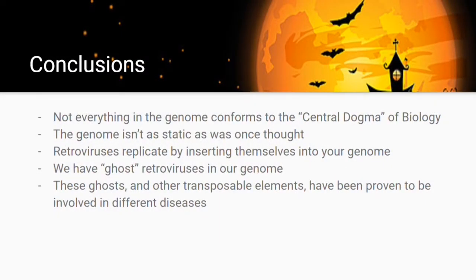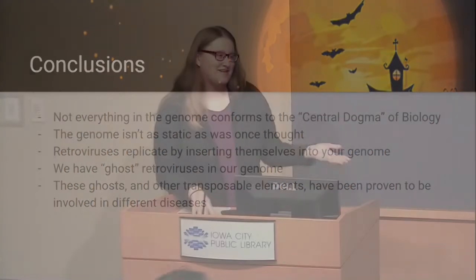The key takeaways from tonight: not everything in the genome conforms to the central dogma — not everything goes from DNA to RNA to protein. Your genome is not as static as once thought; there are elements jumping around like ghosts, not truly alive but not dead either. Retroviruses do this by replicating themselves and inserting into your genome. These ghost retroviruses and other transposable elements have been proven to be involved in different diseases, and we can learn more about what we carry by looking at 23andMe and exploring our genomic history.